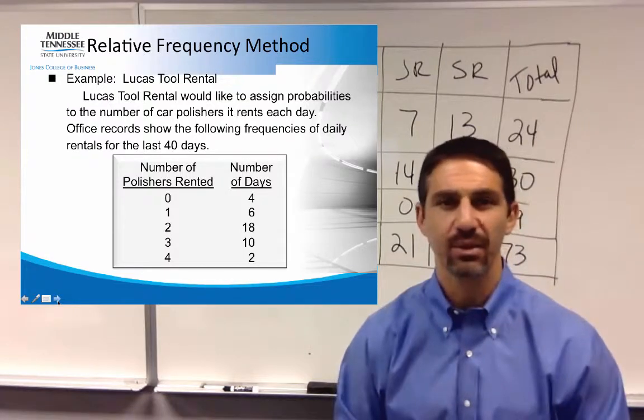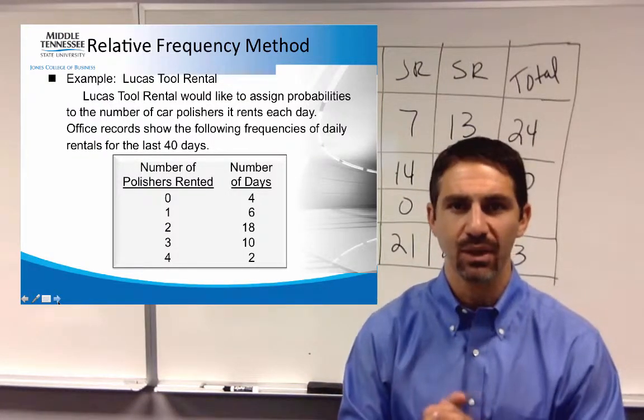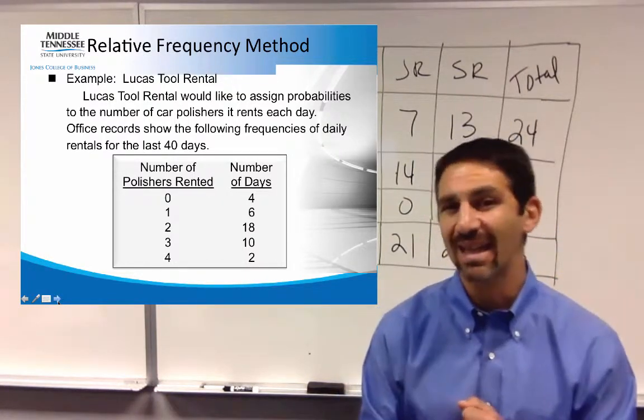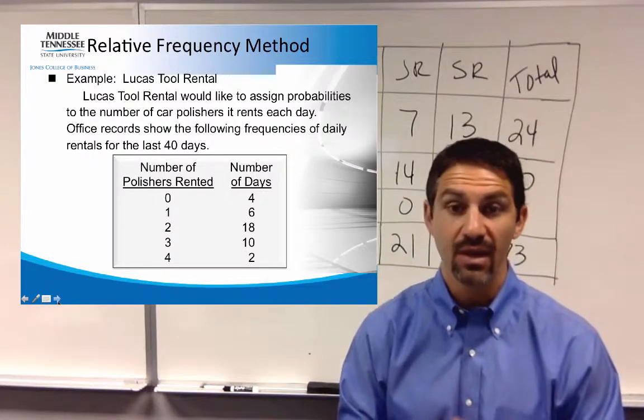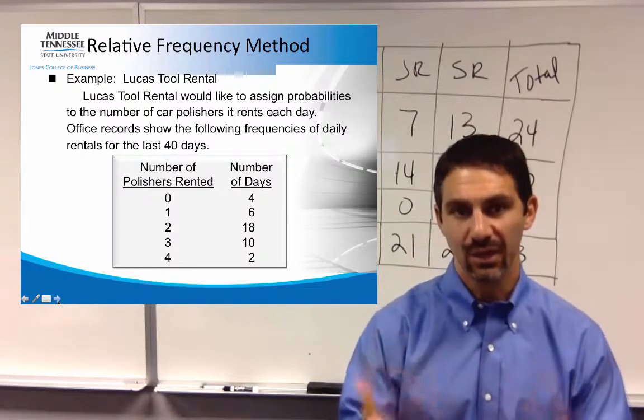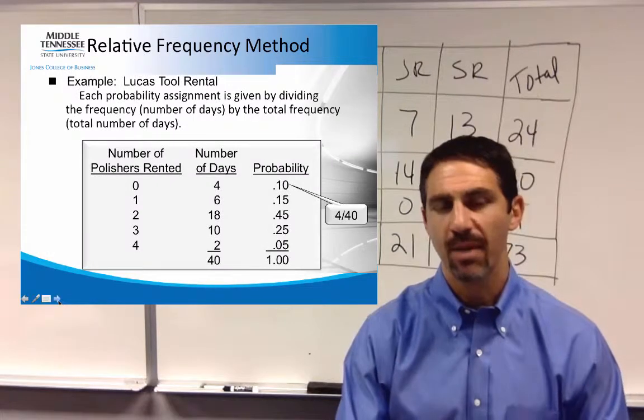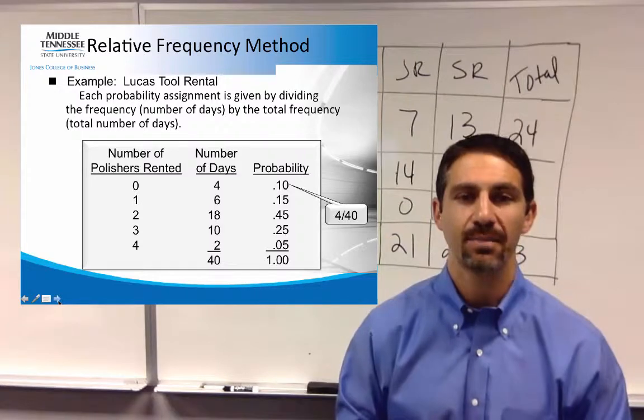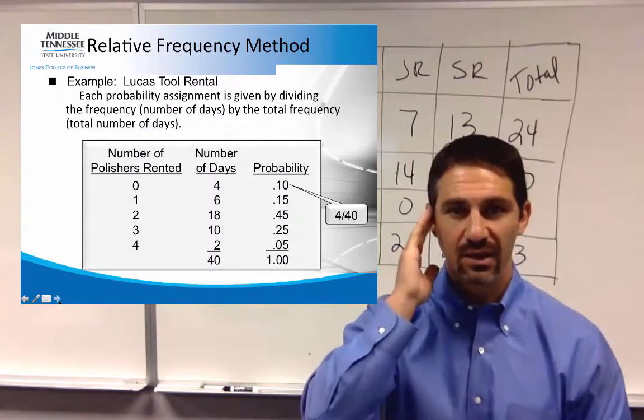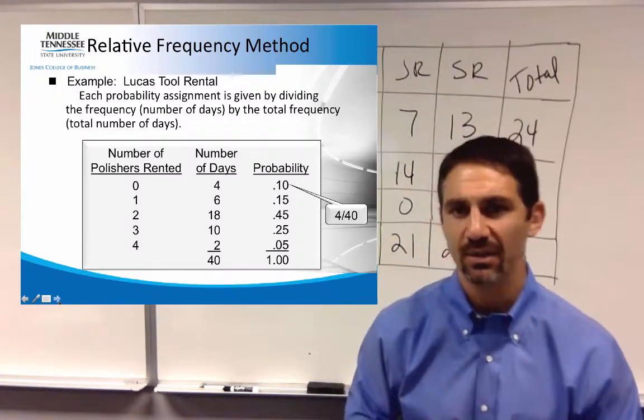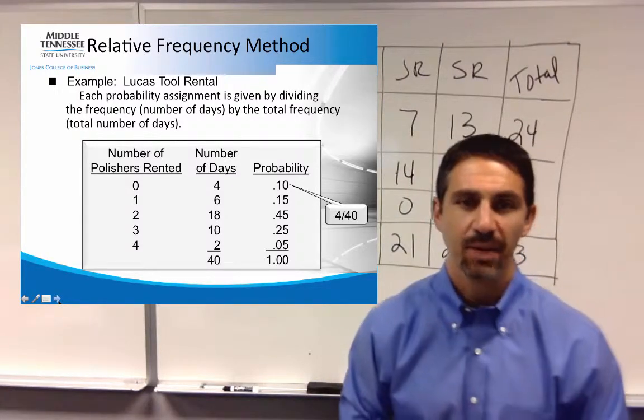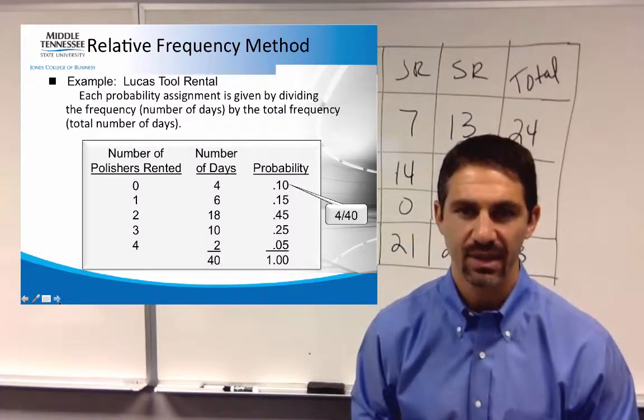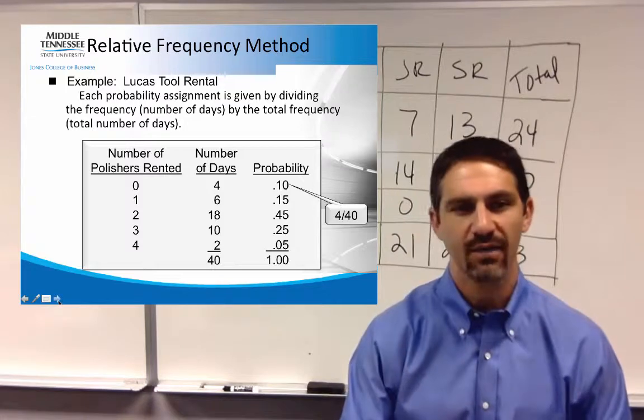If you look at the relative frequency approach, let's just take a look at this example where they're looking at the number of car polishers it rents each day. And they're trying to come up with the likelihood of a certain number. And you can look at the different data this way, come up with some different probabilities. So what's the probability of 0 polishers being rented? And you can see for the number of days that that occurred, it was 4, so it's a 10% chance. The probability of 2 being rented would be 45%. And so you can see how it works with more of that approach.